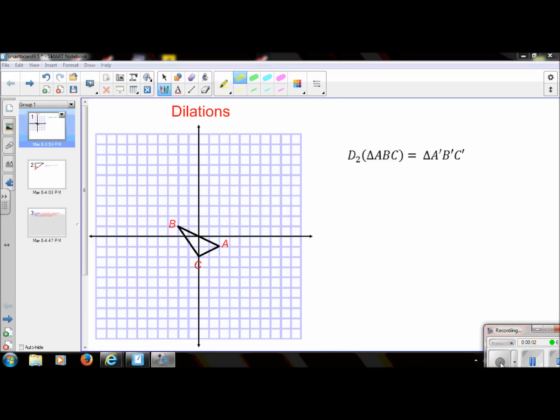Hi everyone. Today we're going to learn about dilations. Dilations are different than isometries because in isometries, remember that the shapes stayed the same size and shape.